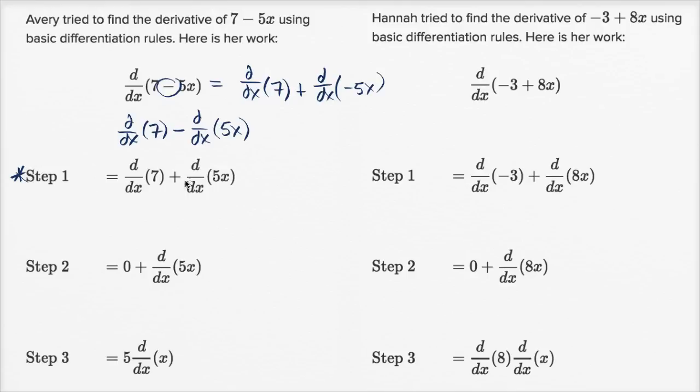Now if you just follow her logic after step one, let's see if she makes any more mistakes. She takes the derivative of a constant. A constant isn't going to change with respect to x, so that makes sense, that derivative is zero. And so we still have the derivative of 5x. Remember, it should have been negative 5x or minus the derivative of 5x.